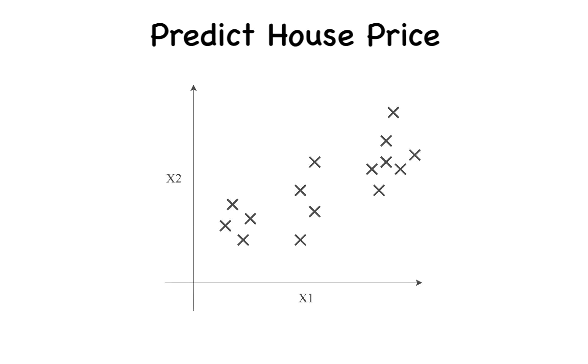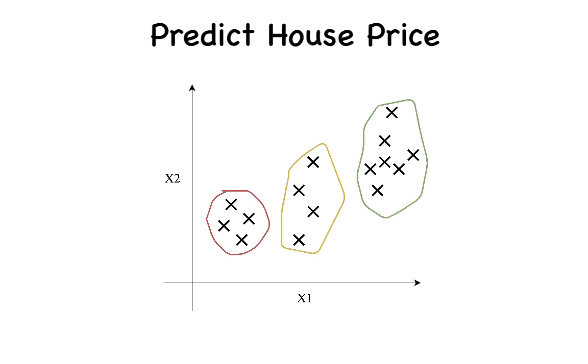For clustering, just plot these houses on a 2D plane against feature 1 and feature 2, and use a clustering model to group these houses into a number of clusters. Houses in a cluster would have similar price ranges.